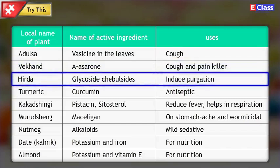Local name of plant: Hirda. Name of active ingredient: Glycoside chebulcides. Uses: Induced purgation.